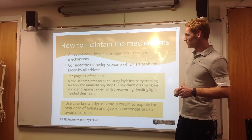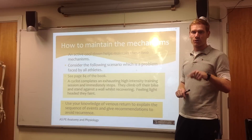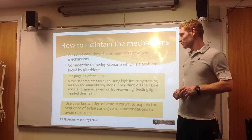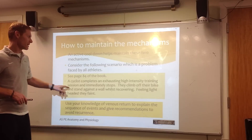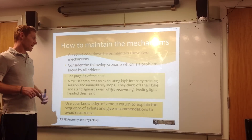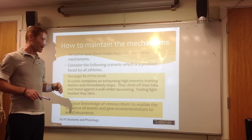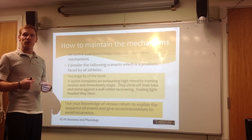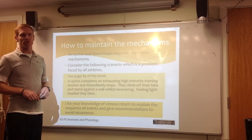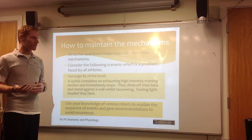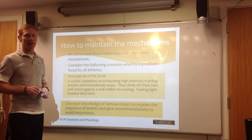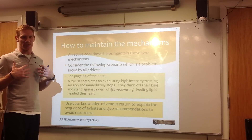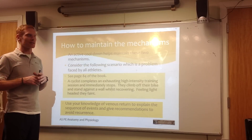This allows us to have enough blood going back to the heart straight after we've done loads of physical activity. One of the scenarios we looked at: a cyclist completes an exhausting, high-intensity training session and then immediately stops. They climb off their bike, stand still, lean up against the wall whilst recovering. They feel light-headed and then they faint. Fundamentally, one of the reasons is because we've stopped all of the mechanisms that are supporting our venous return. Smooth muscle is still in place; however, the ones that really aid us — the skeletal muscle pump and the respiratory pump — because of the increase in our respiratory rate, these also aid venous return.